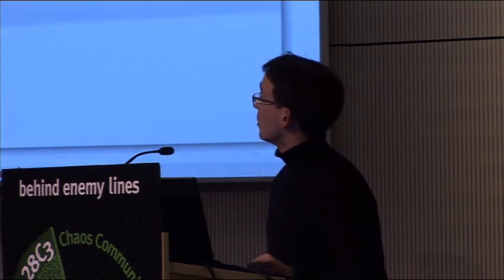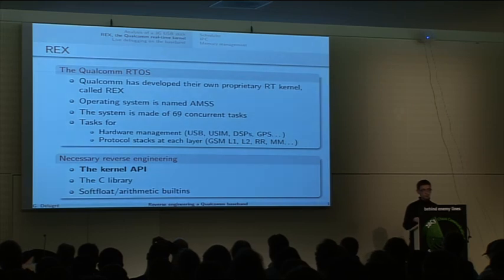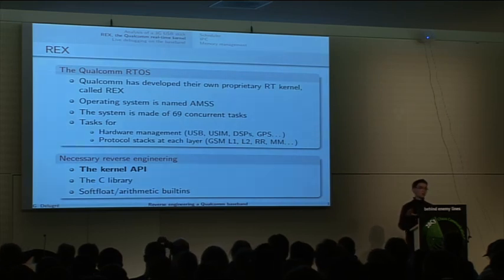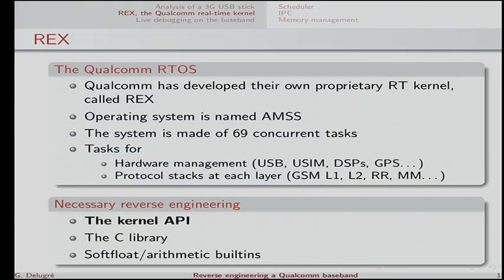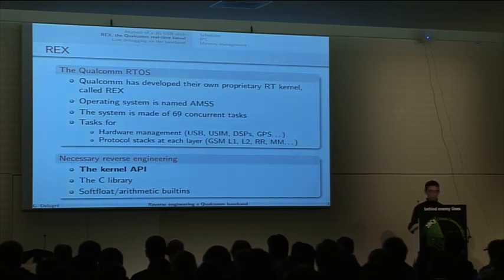Qualcomm has developed its own proprietary real-time kernel called REX, standing for Real-Time Executive. The whole operating system — meaning the kernel plus the network stacks and any processes — is named AMSS. The system is made of approximately 70 tasks running concurrently in the baseband. Each task has a different purpose: some tasks handle hardware like USB, UCM, DSPs, and so on. You also have one task for each protocol stack at each layer, such as L1, L2, or RRC for WCDMA, and so on.